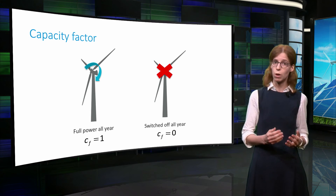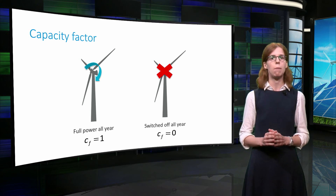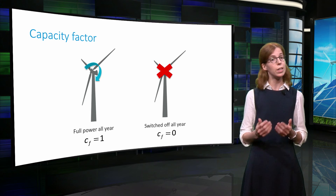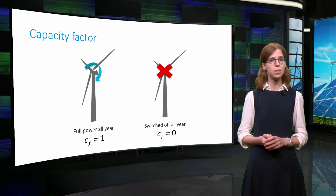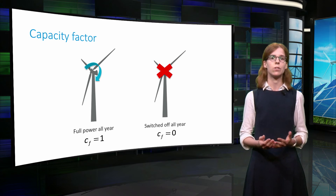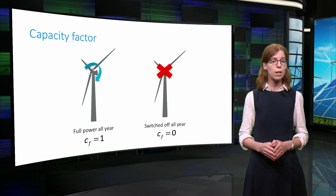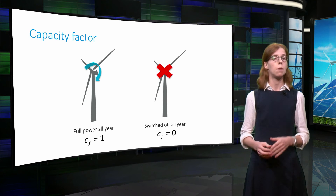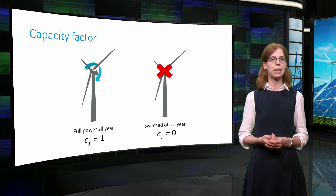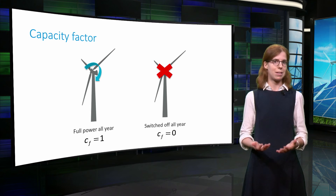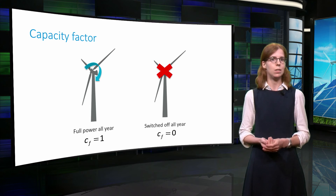By contrast, if the same wind turbine does not run at all during the year, the capacity factor is zero. Thus crucially, the capacity factor is not a measure of the quality of the system. Because no matter how good a wind turbine is, if it is always switched off, its capacity factor is zero.